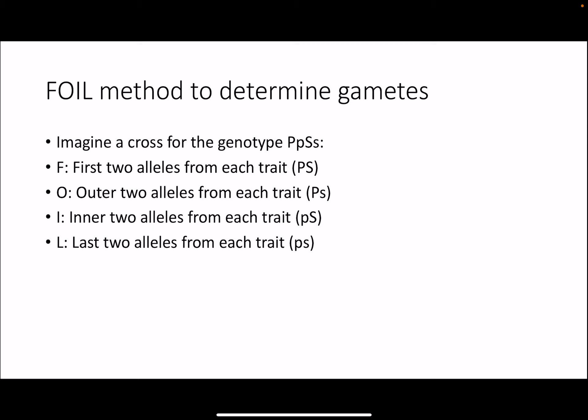An easy trick to figure out the different gametes that can be produced by an individual is the FOIL method — First, Outer, Inner, Last. If you have a dihybrid cross with the genotype big P, little p, big S, little s — you take the first two alleles: big P and big S; the outer two: big P and little s; the inner two: little p and big S; and the last two: little p and little s. This gives you each of the kinds of gametes. You use these to fill in the column and row headers for your Punnett square and then combine each gamete from each parent to fill out the dihybrid Punnett square.